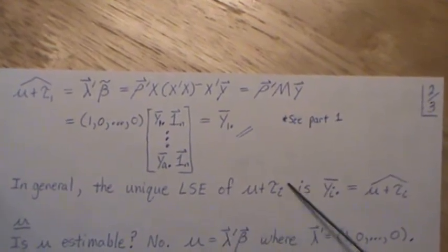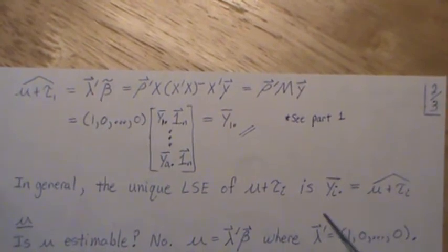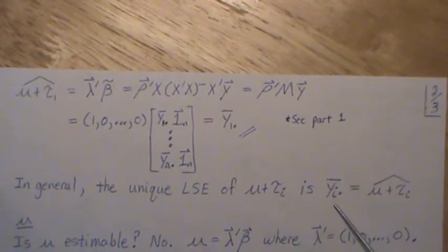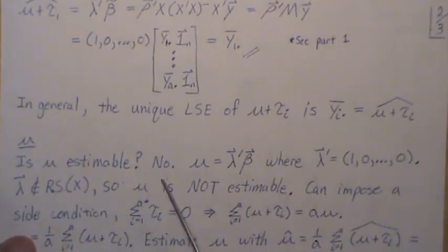In general, the least squares estimates of the ith treatment effect is the mean of the ith treatment, the mean of the observations when we expose them to treatment i. Now, is μ estimable? The answer is no.